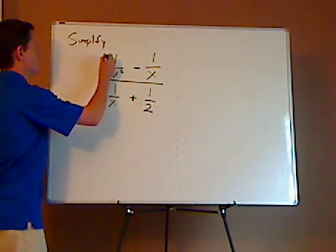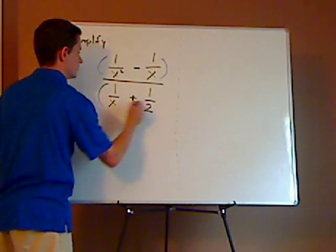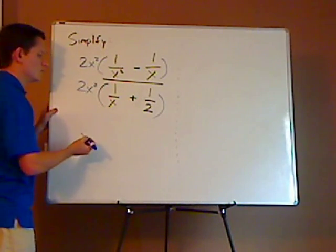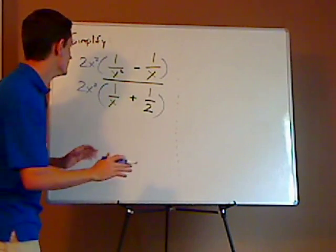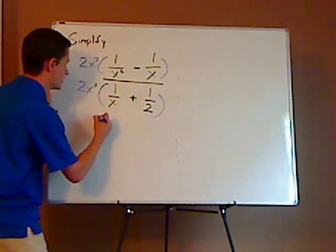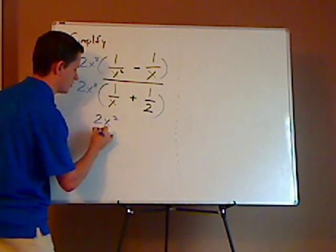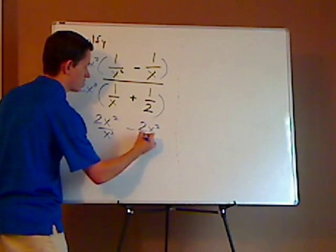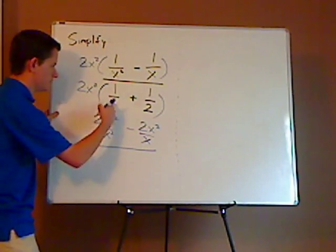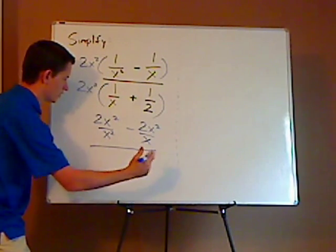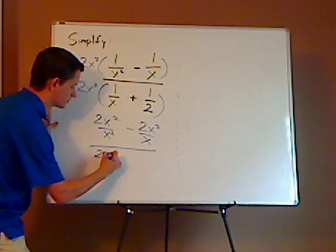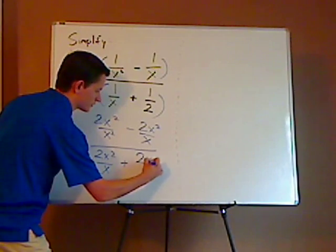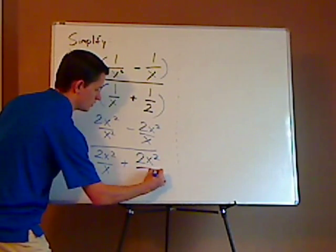So multiply the top and the bottom by 2x squared. When you do that, everything is going to cancel out, that's the beauty of this method. So you're going to have 2x squared over x squared minus 2x squared over x, and then in the denominator of the larger fraction you have 2x squared over x plus 2x squared over 2.